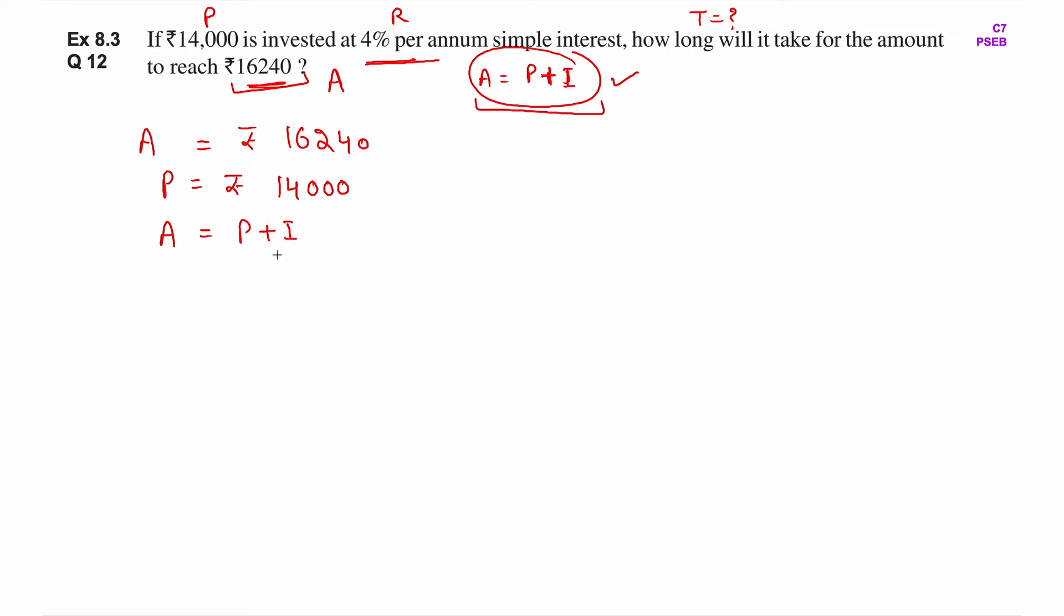Using this formula, we'll put A and P values to find I value. I means interest. So 16,240 equals 14,000 plus I. Therefore, I equals 16,240 minus 14,000. So I equals 2,240 rupees.